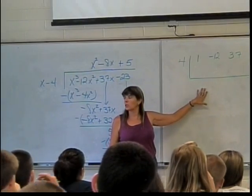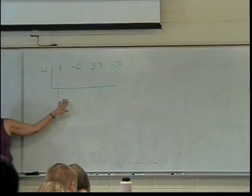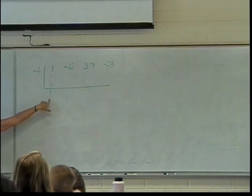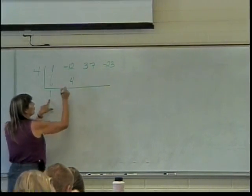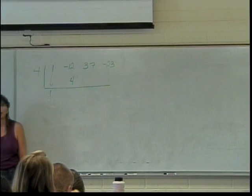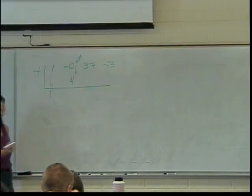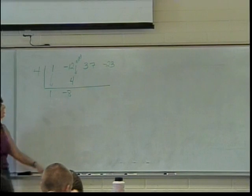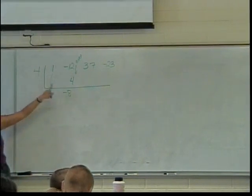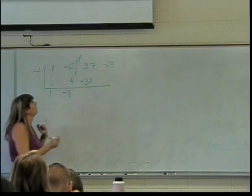Here's the process — it always starts the same way. This first number always comes down and becomes the first coefficient in the answer. Now we take the number outside to the left, multiply it by that first coefficient, and write that answer under the next number to the right. So I've taken 4 times 1, and I'm writing 4 under my negative 12. Now I add down: negative 12 plus 4 gives me negative 8. Then 4 times negative 8 gives me negative 32, which I write under 37. And 37 plus negative 32 gives me 5.